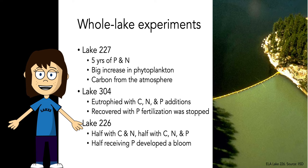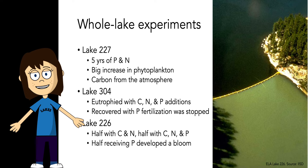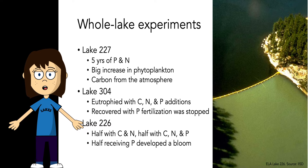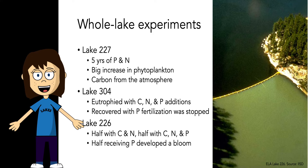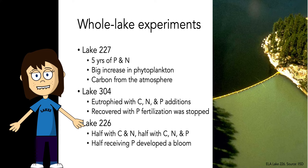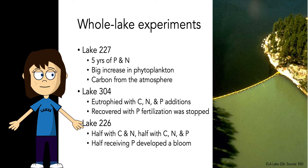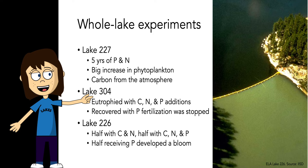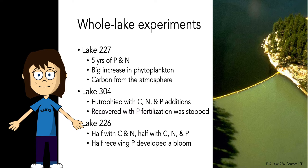Some of the most famous whole lake nutrient enrichment experiments were run at the Experimental Lakes Area in the 1970s. On Lake 227, there were five years of added phosphorus and nitrogen, resulting in a big increase in phytoplankton growth, while carbon wasn't limiting because there was abundant carbon available from the atmosphere. At the same time, Lake 304 was eutrophied with carbon, nitrogen, and phosphorus additions, and when the phosphorus additions were stopped, the lake actually recovered from eutrophication. Lake 226 was divided by a curtain, with half receiving carbon and nitrogen, and the other half receiving carbon, nitrogen, and phosphorus.